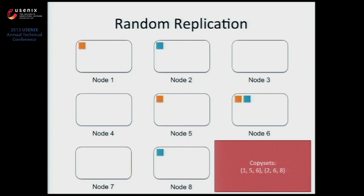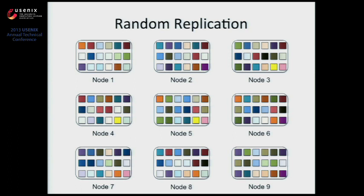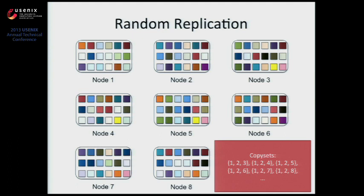With random replication, each node has 10,000 chunks or more, so you continuously replicate onto more and more nodes, spraying data across the cluster. As you replicate more, you create more and more copy sets — more and more units of failure. Eventually, if you have enough data, basically any combination of three nodes in your cluster is going to cause data loss. That's why random replication loses data at such high probability.